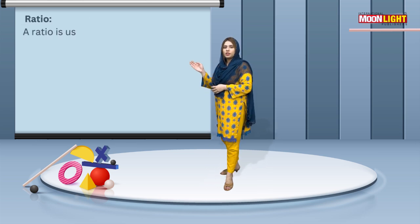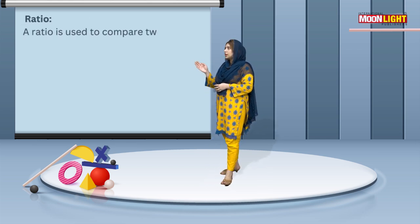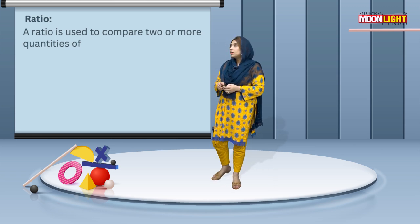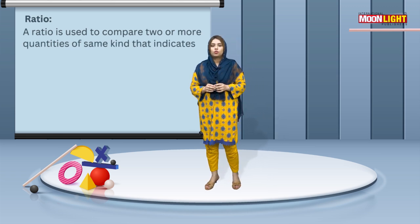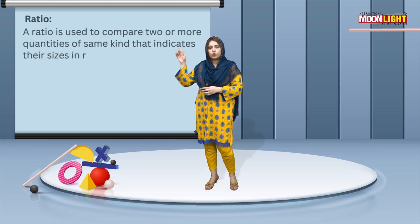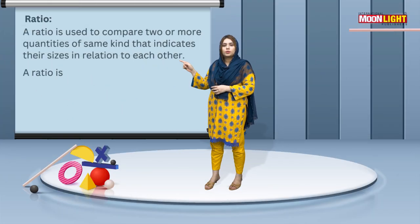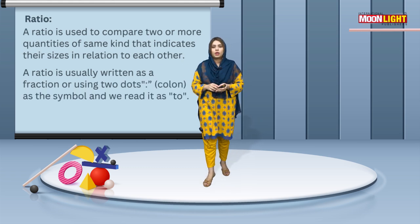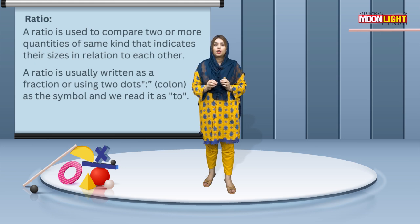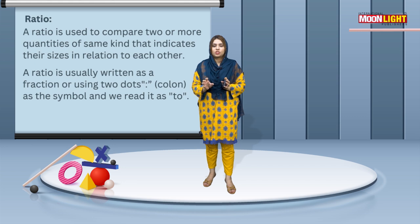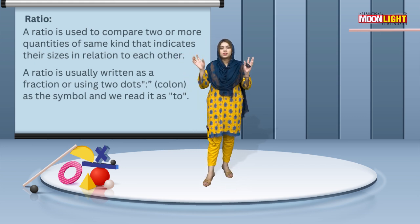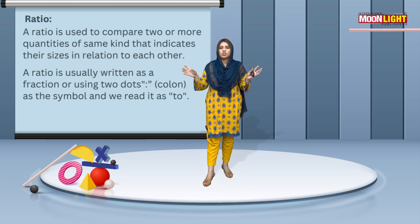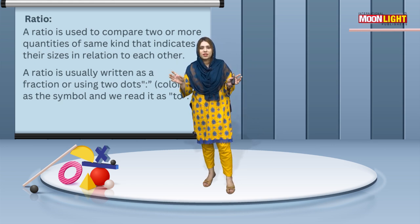First of all, we will talk about the ratio. Ratio is a term that is used to compare two quantities by division. You can always write the ratio using two dots. If we compare kilograms, then you have two quantities in kilograms. If you compare it in meters, then you have two quantities in meters.